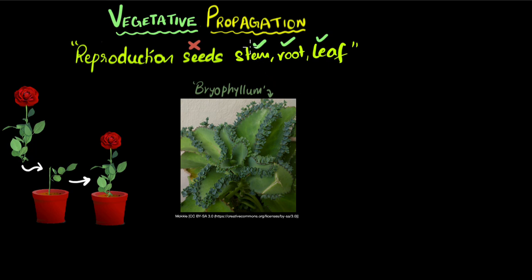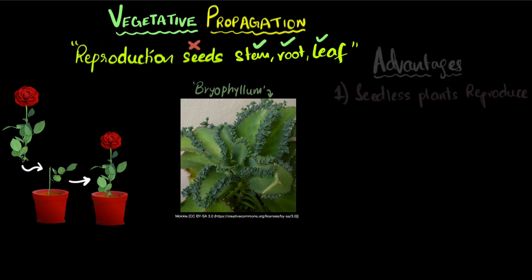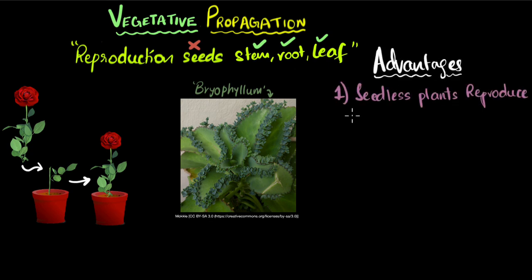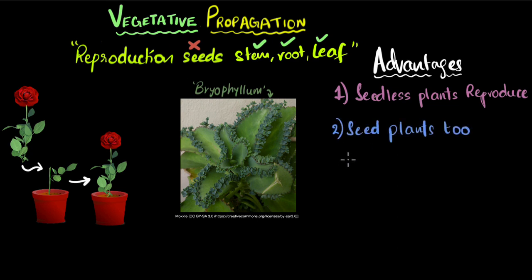Now let's look at a few cool features of vegetative propagation. The first cool feature is that it's the only way in which seedless plants can reproduce. If this did not exist, seedless plants wouldn't be able to reproduce. But even the plants that have seeds can also reproduce this way, which basically means any plant can reproduce this way.